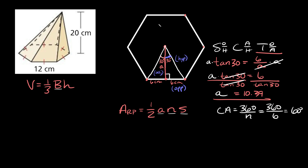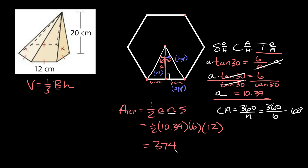Now we can plug that number into the area formula. The area of this regular hexagon is equal to one-half times the apothem (10.39) times the number of sides (6) times the length of each side (12). If you multiply this all out, you get that the area of this regular polygon is approximately 374.12 centimeters squared.